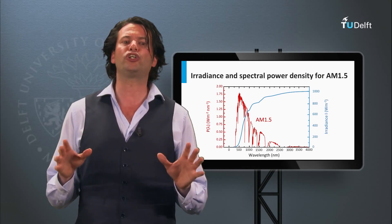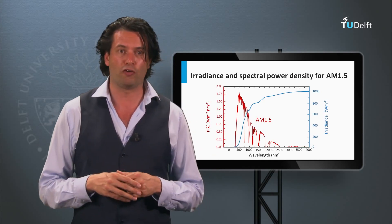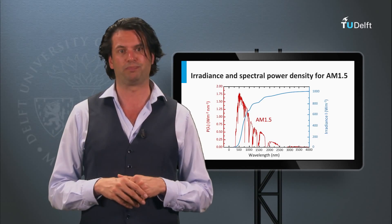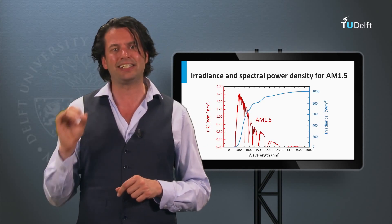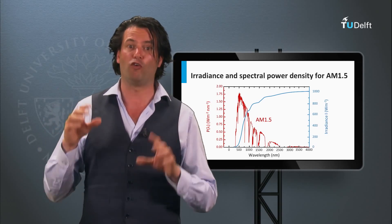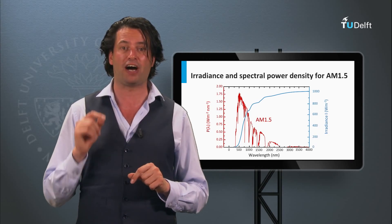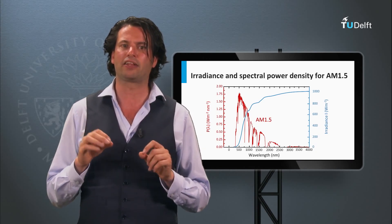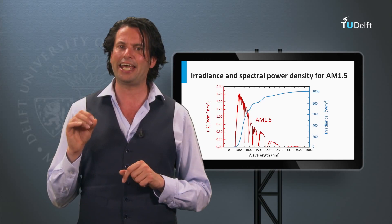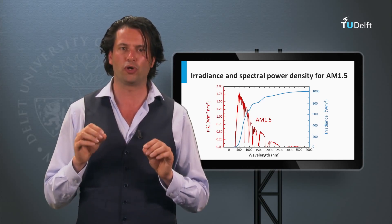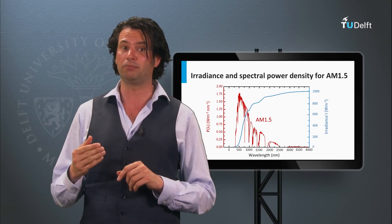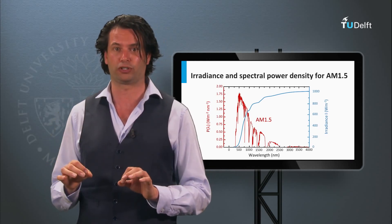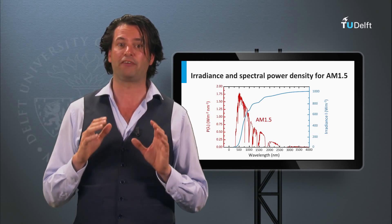In week 3, we will discuss how to determine the performance of solar cells using solar simulators — lamps which try to simulate the solar spectrum as closely as possible. It has been decided that the standard test conditions for the solar spectrum have the spectral shape of solar light with a path length of AM 1.5 through the atmosphere, and the irradiance of this spectrum is 1000 watts per square meter. Here, the spectral power density of the AM 1.5 spectrum is plotted.